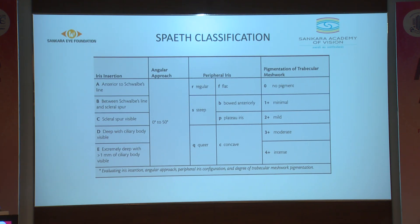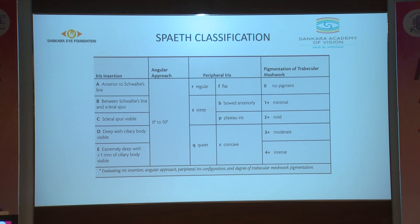The Spaeth classification takes into account iris insertion, angular approach of the iris, peripheral iris configuration, and pigmentation of the trabecular meshwork. Iris insertion was graded A through E: from anterior to Schwalbe's baseline, between Schwalbe's baseline and scleral spur, scleral spur visible, deep with ciliary body visible, to extremely deep with more than 1 mm of ciliary body visible. Peripheral iris configuration was graded as regular (R), flat, steep — either bowing anteriorly or plateau iris — or queer (concave). Trabecular meshwork pigmentation was graded from no pigment to 4-plus intense pigmentation.